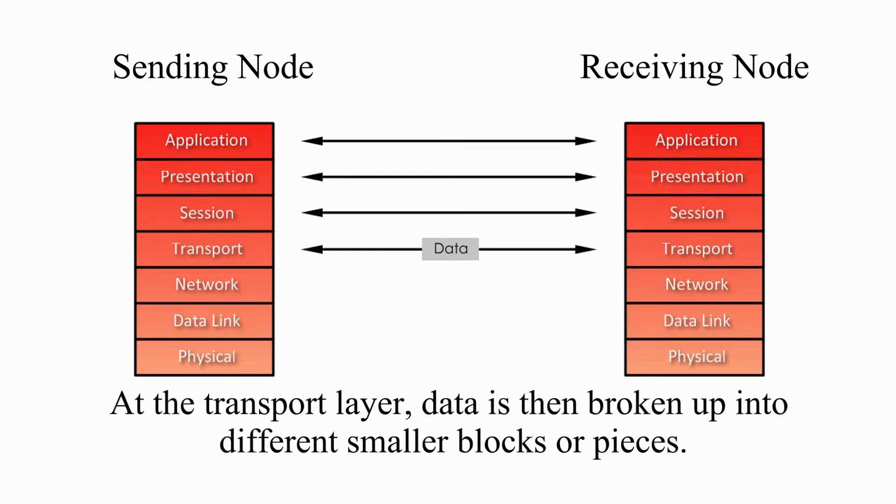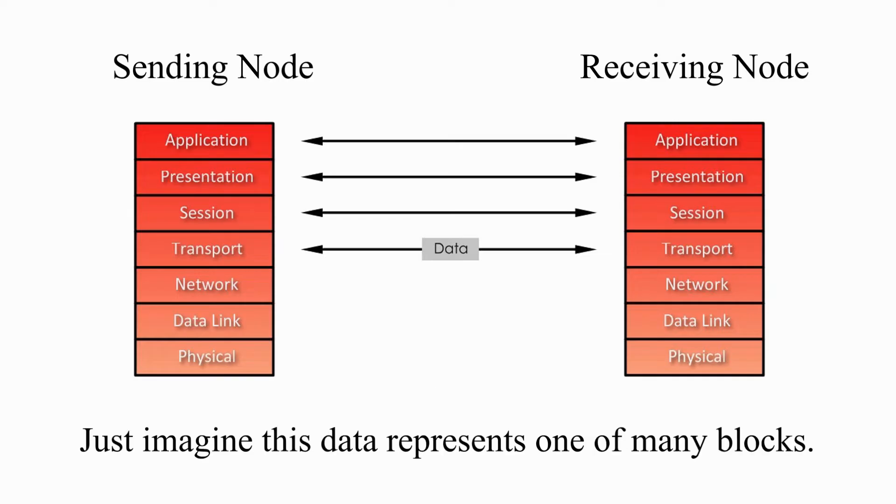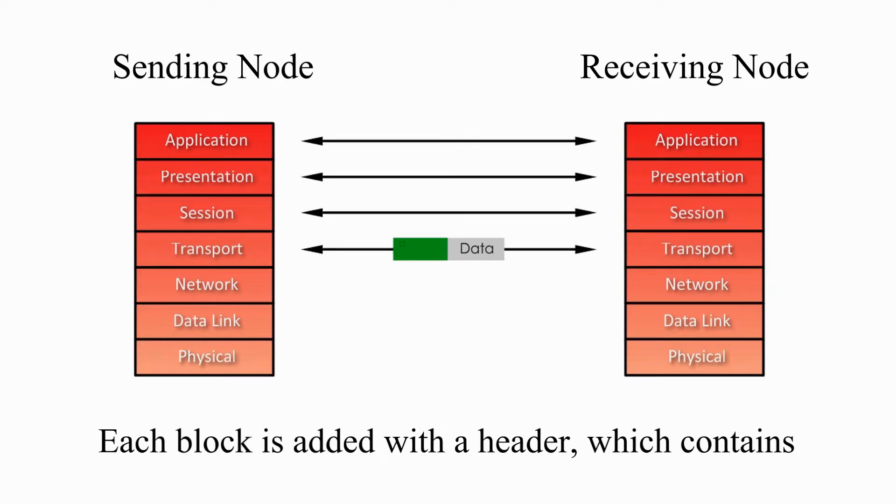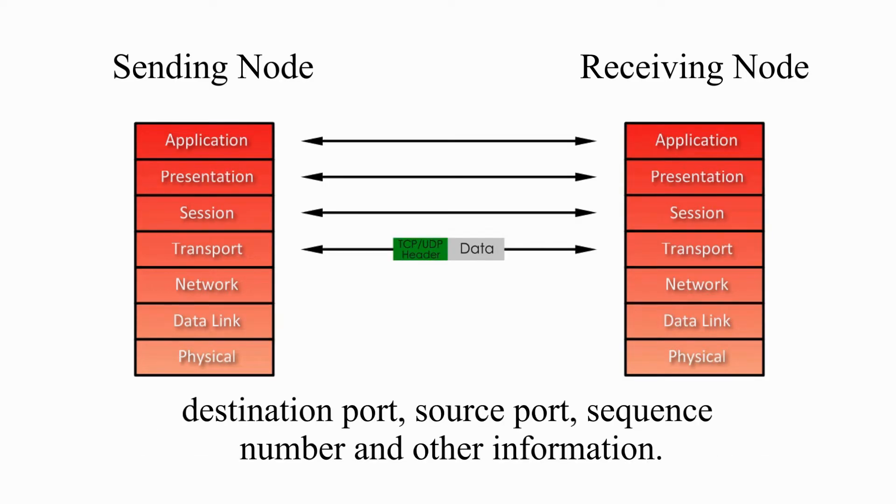At the transport layer, data is then broken up into different smaller blocks or pieces. Each block is added with a header which contains destination port, source port, sequence number, and other information.